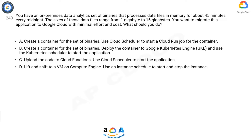Option A: Create a container for the set of binaries; use Cloud Scheduler to start a Cloud Run job for the container. Option B: Create a container for the set of binaries, deploy the container to Google Kubernetes Engine (GKE), and use the Kubernetes scheduler to start the application.